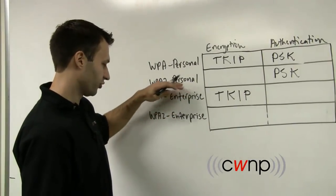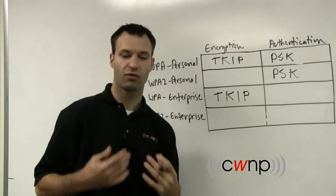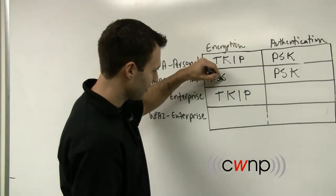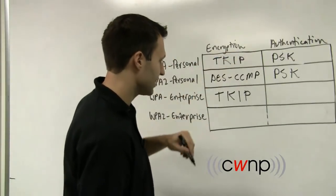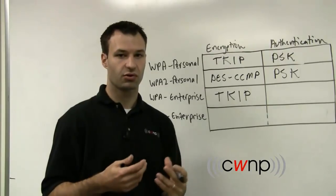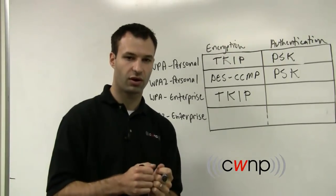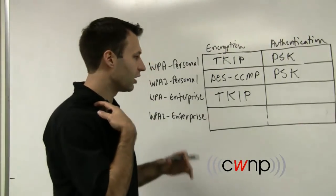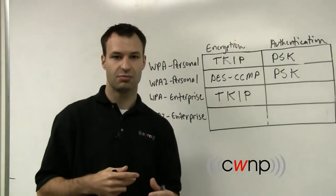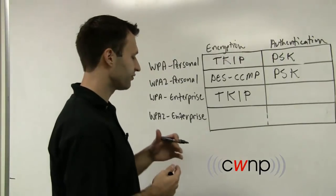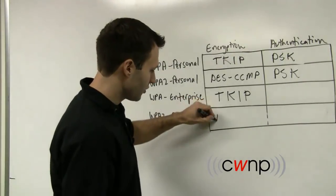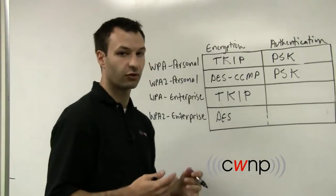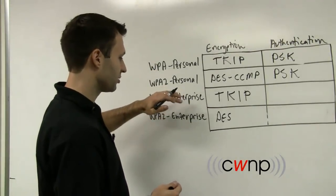With WPA2 Personal and WPA2 Enterprise, a more future-proof encryption cipher suite is used. The encryption algorithm is called AES, used along with a cipher suite called CCMP. There are many technologies and protocols that go along with AES CCMP — we'll cover those in a different session. For now, understand that AES CCMP is the future-proof version of modern Wi-Fi encryption, and it is the primary encryption method used with WPA2 Personal and WPA2 Enterprise.